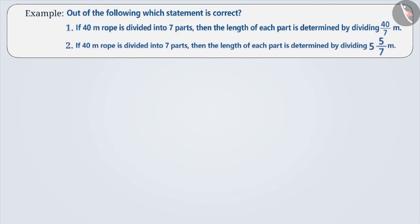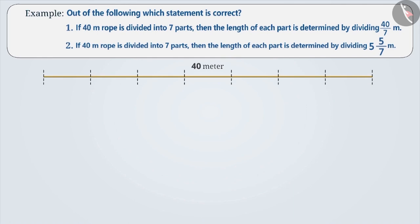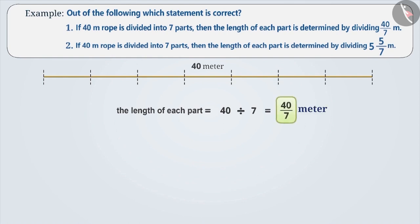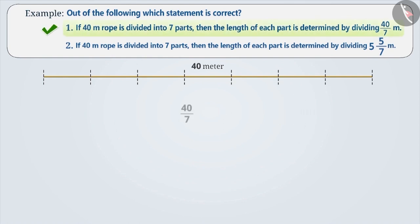Next example: out of the following, which statement is correct? If we have to divide a 40-meter rope into 7 parts, then the length of each part is determined by dividing 40 by 7. This is expressed in fraction as 40 by 7. Therefore, option 1 is correct. The length 40 by 7 is expressed in the form of an improper fraction.